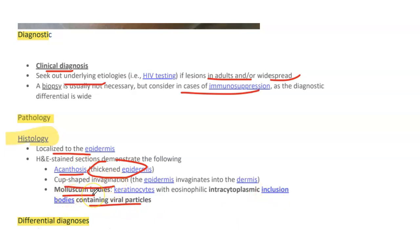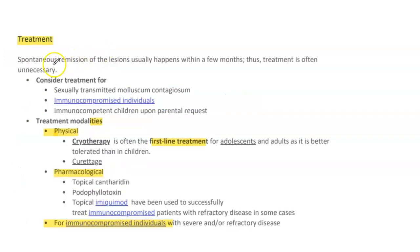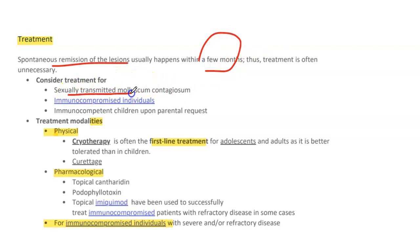There are various differential diagnoses to consider. Treatment: spontaneous remission usually occurs within a few months and treatment is often unnecessary, but consider treatment for sexually transmitted molluscum contagiosum, immunocompromised individuals, and immunocompetent children upon parental request.